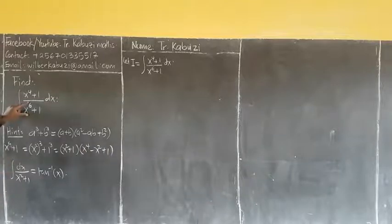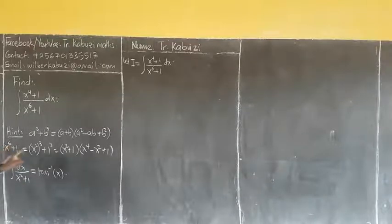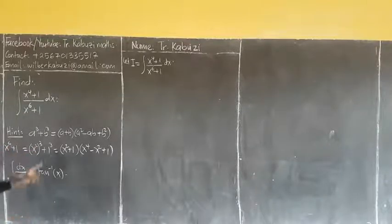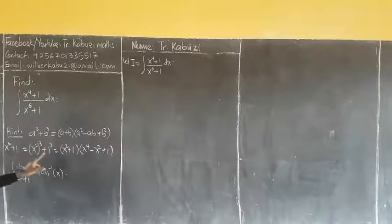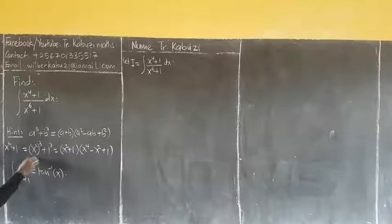So, to factor x⁶ plus 1, I can break it using indices. It's the same as x² to the power of 3. And 1 is the same as 1 cubed. So x² becomes my a, and 1 becomes my b.